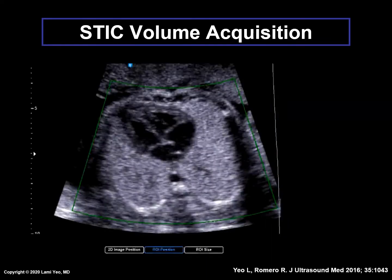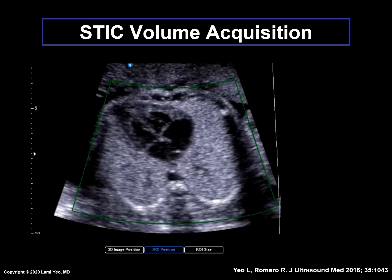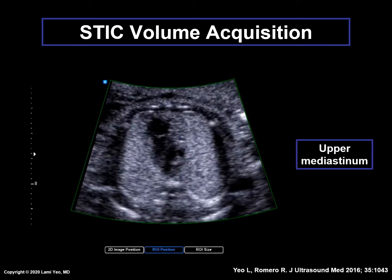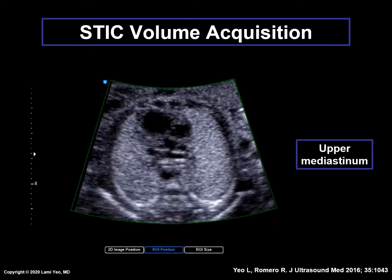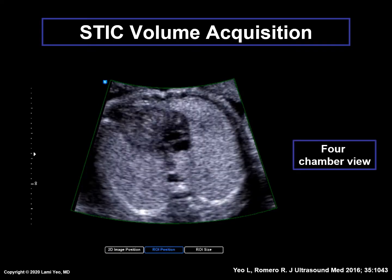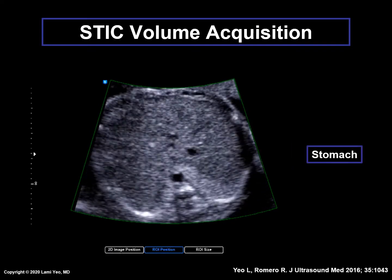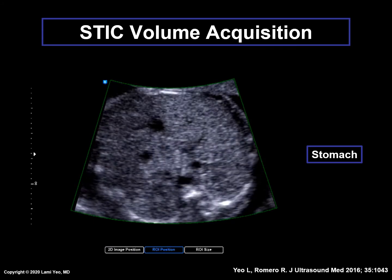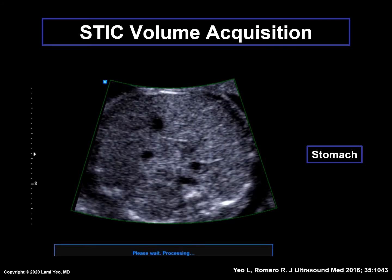Here is an example of a STIC volume being acquired. It sweeps from the upper mediastinum, through the four-chamber view, and then down to the fetal stomach. When completed, the STIC volume display comprises thousands of two-dimensional images acquired through the area of interest during this single automated sweep.